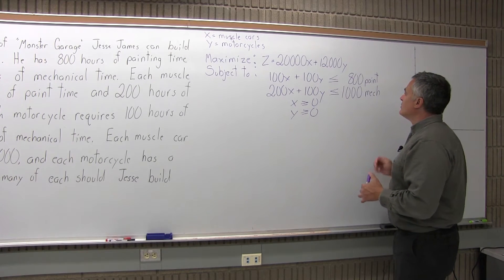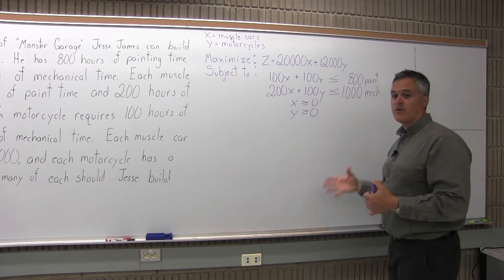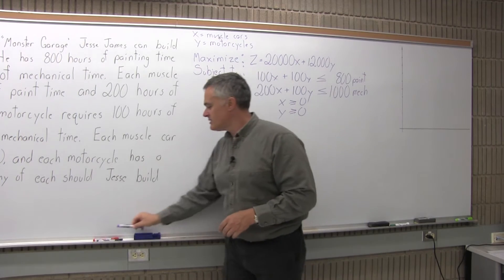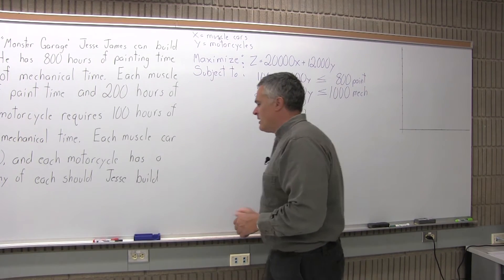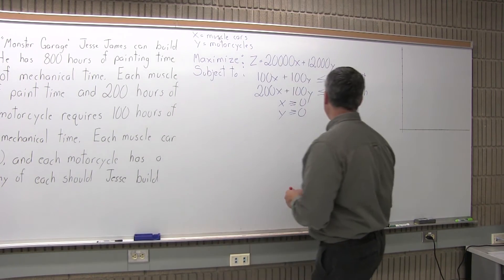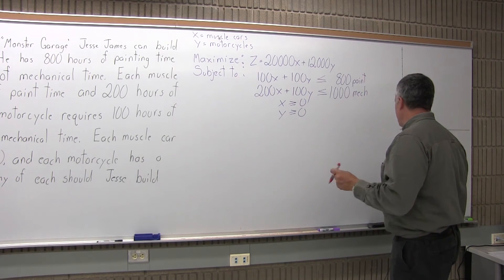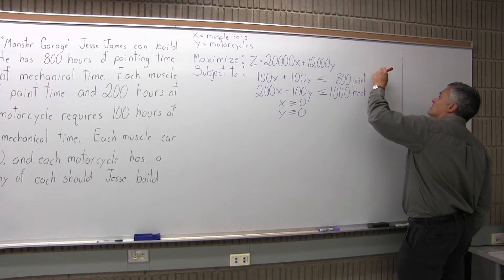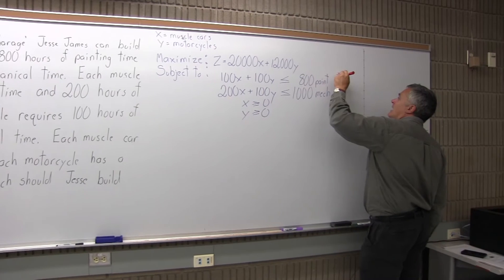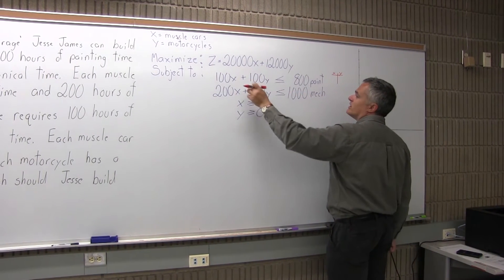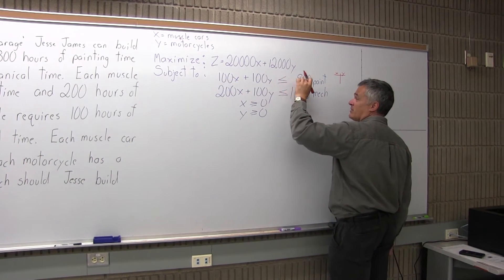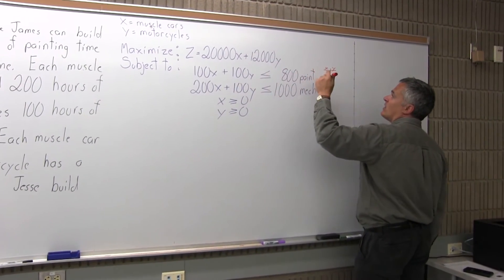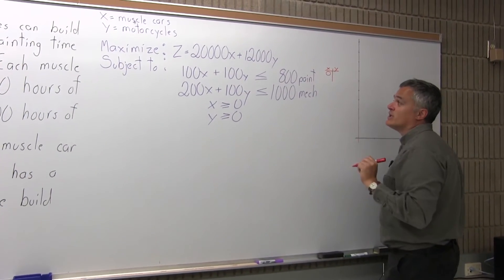I have two constraints — one for paint, one for mechanical — and I'm going to graph each one in different colors. I'll shade them in and find my corner points. For the paint constraint I'm going to do it in red. I'm going to make a little XY chart next to my paint constraint, and pretend that my paint constraint is 100X plus 100Y equals 800. In terms of just drawing the line itself, I'm going to treat it as an equation, not an inequality.